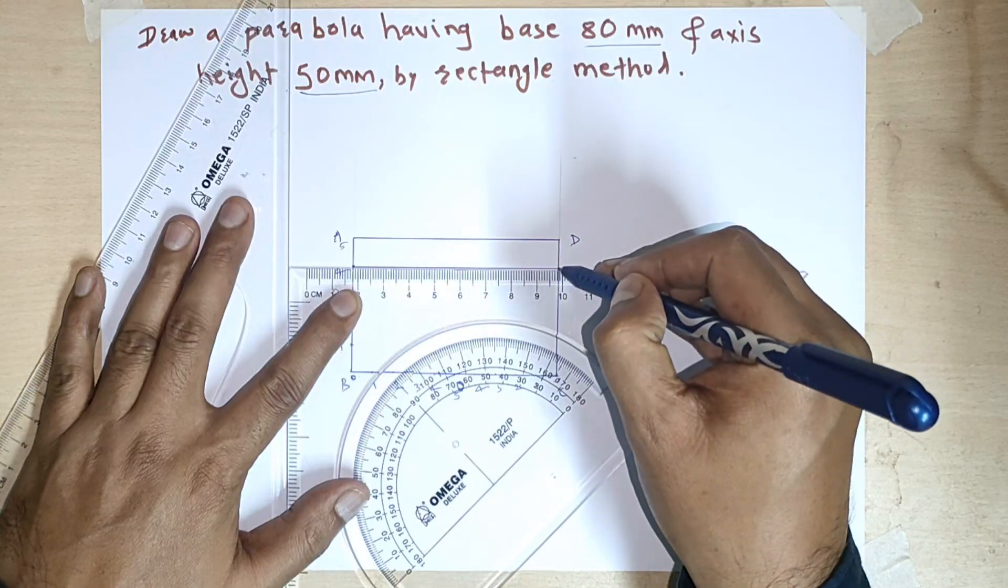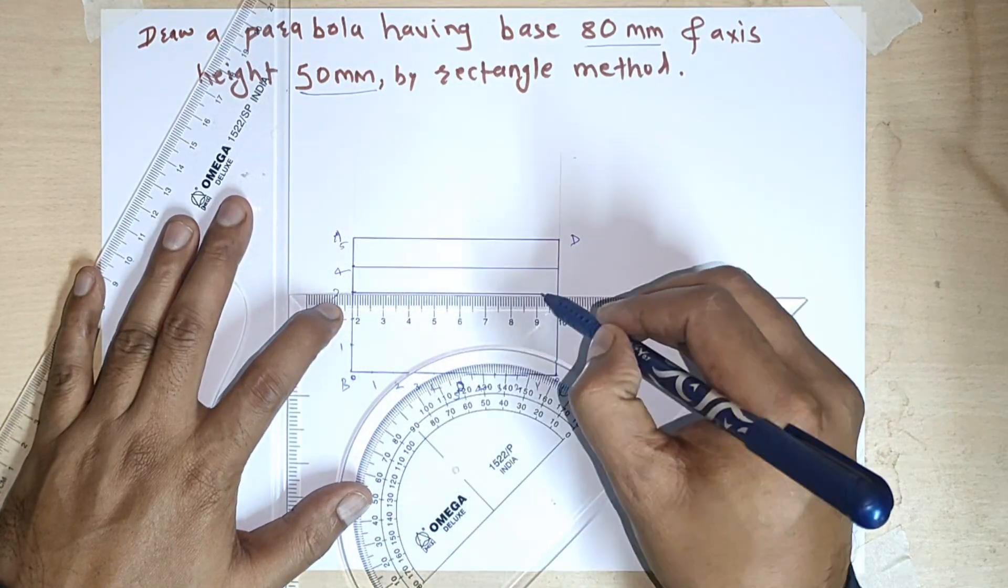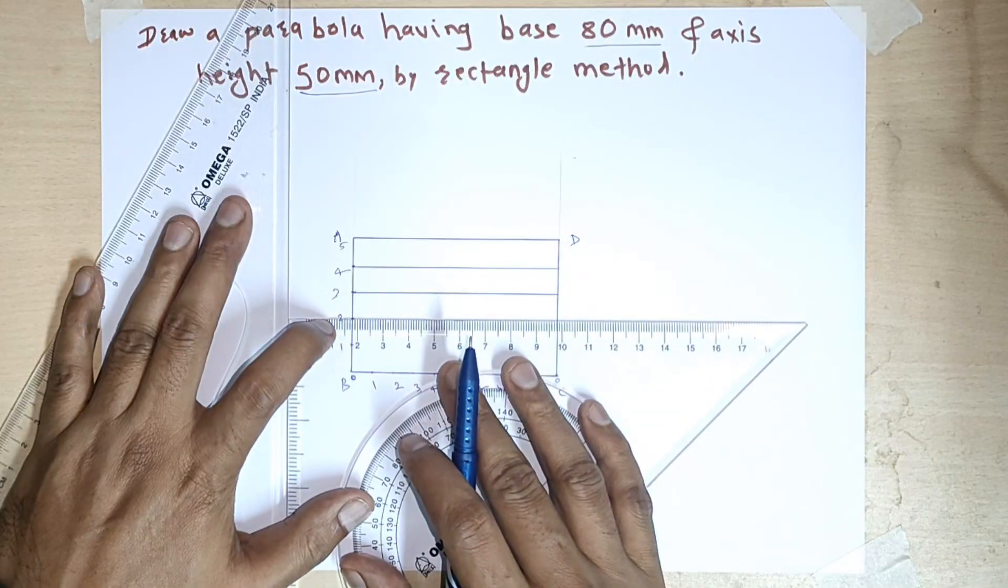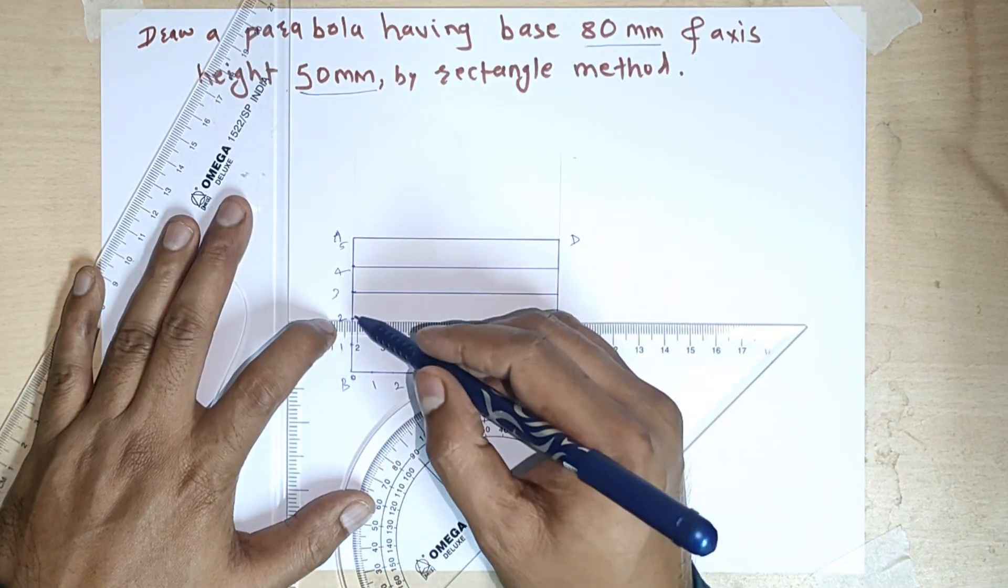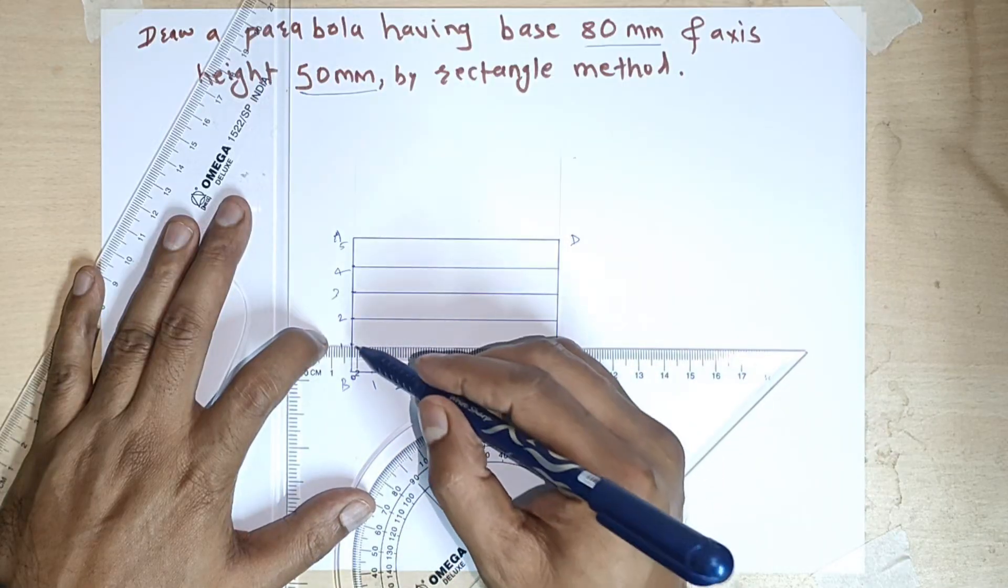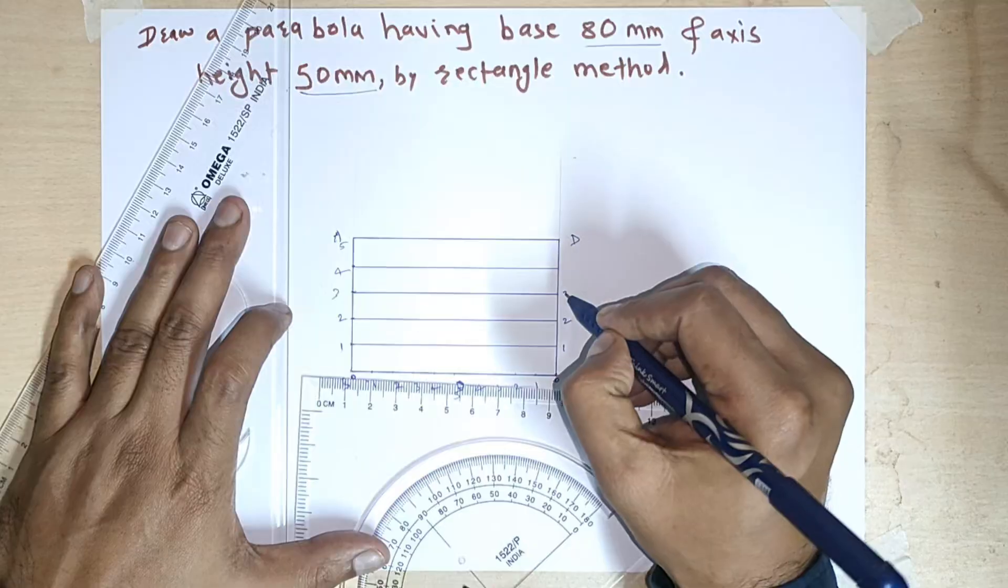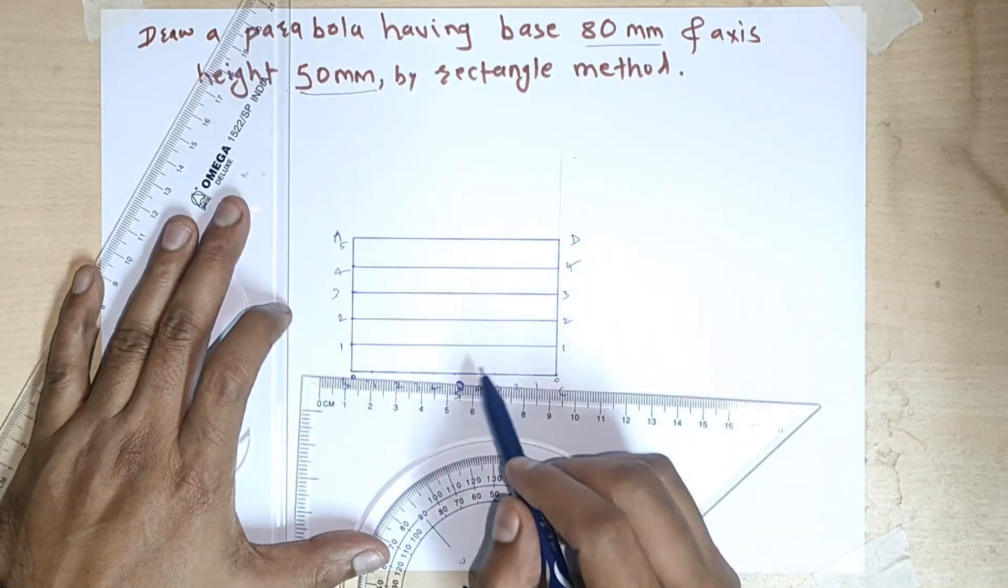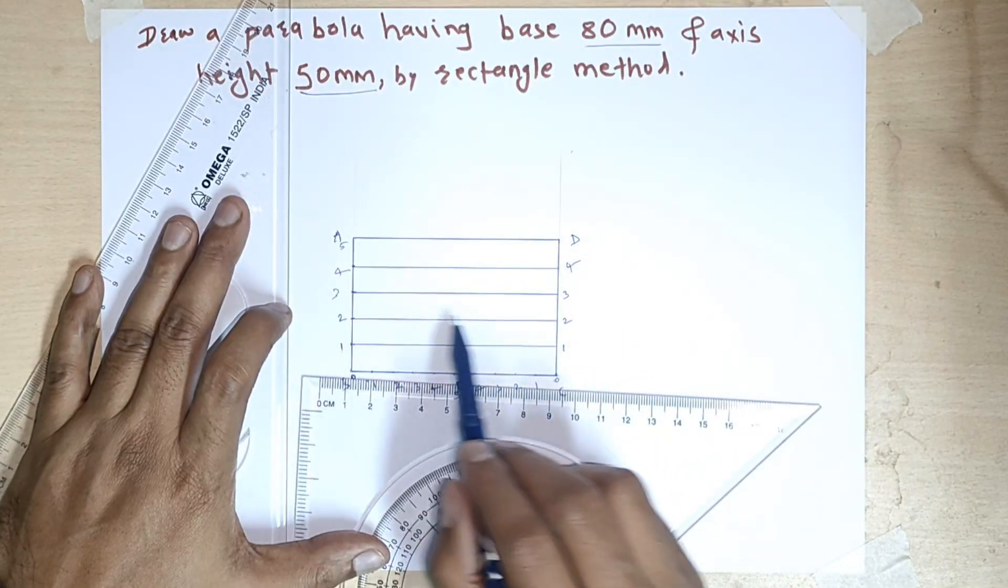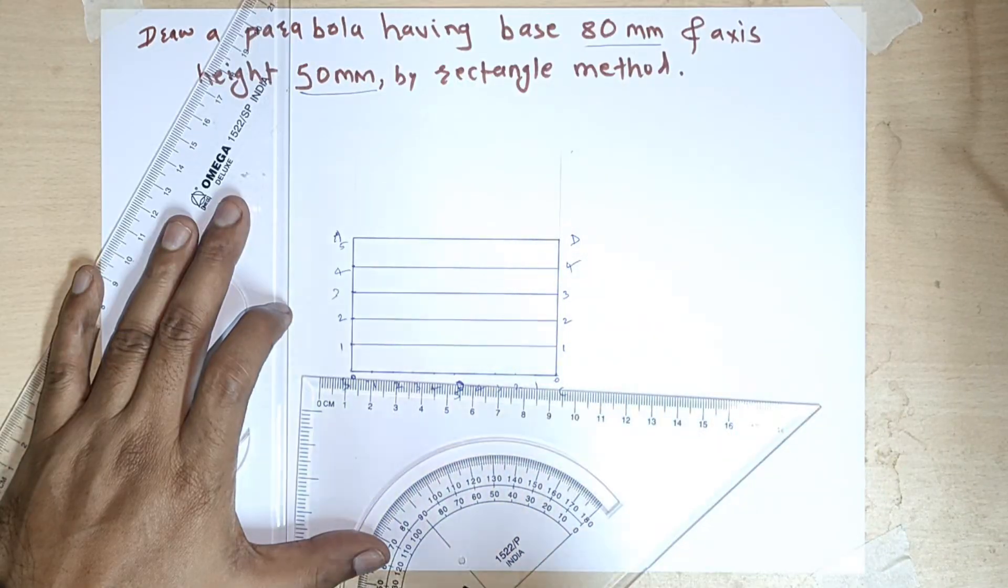So this is 1, 2, 3 and 4. So we will get here 1, 2, 3 and 4. There is no necessity to draw these horizontal lines. You can skip the horizontal lines and you can simply mark these points.